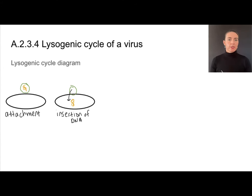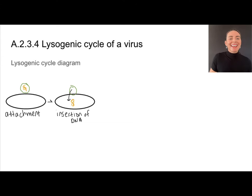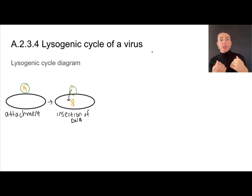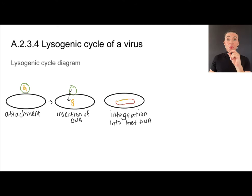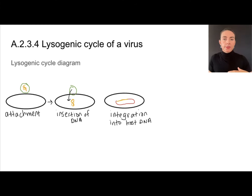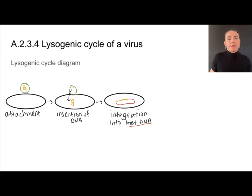The lysogenic cycle starts off in a similar fashion — the virus attaches to the host cell and then the genetic material, let's say DNA, is inserted into the host cell. But instead of being transcribed and translated to produce new viral particles, the viral DNA actually becomes part of the host DNA.